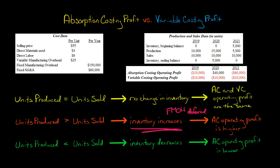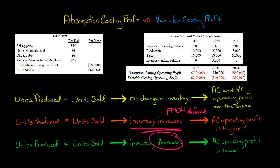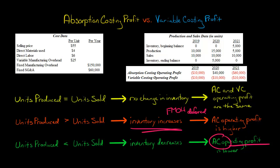Now, it works the opposite way. If the company produces fewer units than it sells in a period, then inventory is going to go down, and you're going to have some of that fixed manufacturing overhead that had been deferred from a prior period now being expensed this period. So the absorption costing operating profit would actually be lower than what the operating profit would be if the company used variable costing.